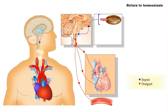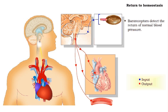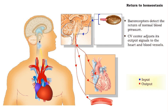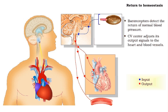As the pressure of the blood in the arteries goes up, the change is detected by the baroreceptors that send the information about the restored blood pressure up to the brain. When the brain receives this response, it will cut back on its stimulation to the heart and blood vessels because homeostasis has now been achieved.